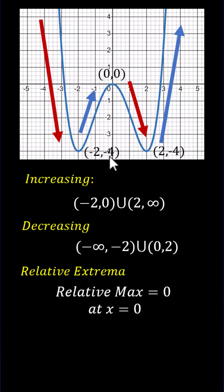Notice we have two low points. Both have function values or y values of -4, which indicates the relative minimum is -4 at x = -2, as well as x = 2.